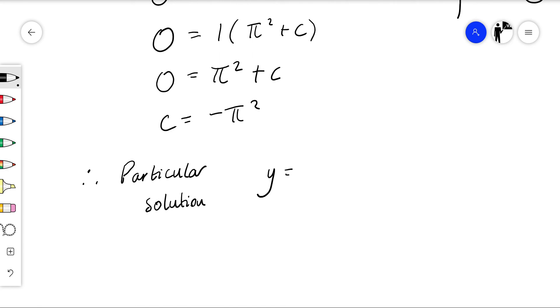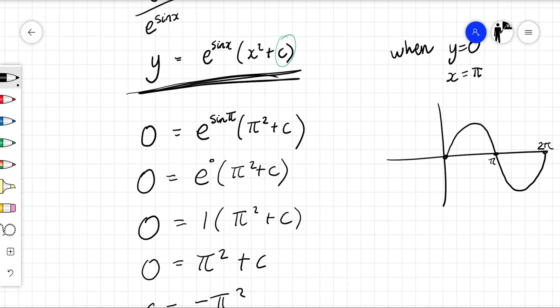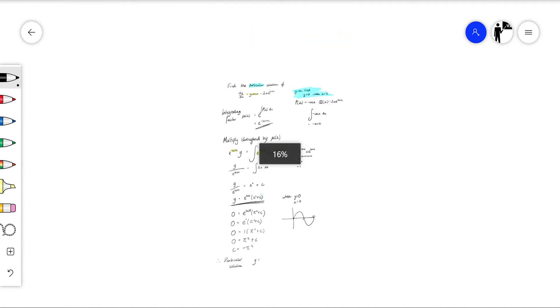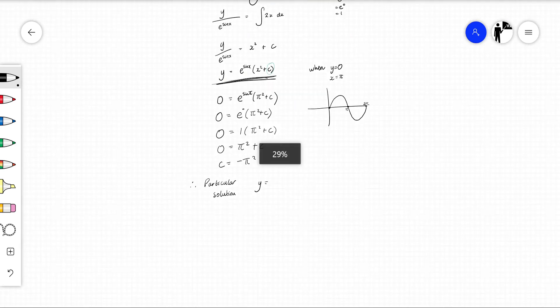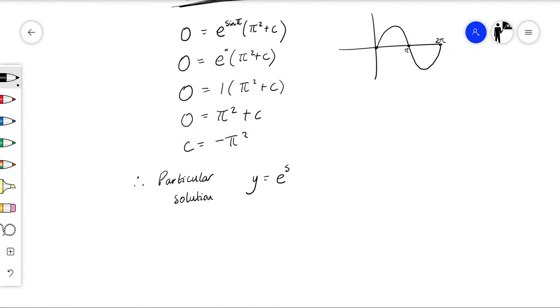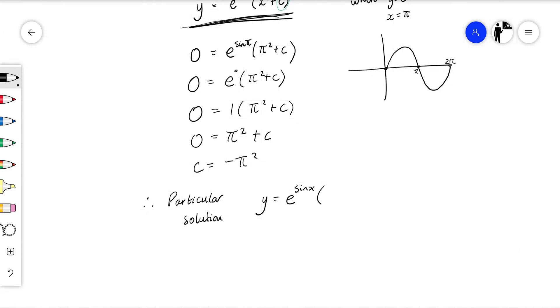Therefore my particular solution is y equals e to the sine x times bracket x squared minus π squared.